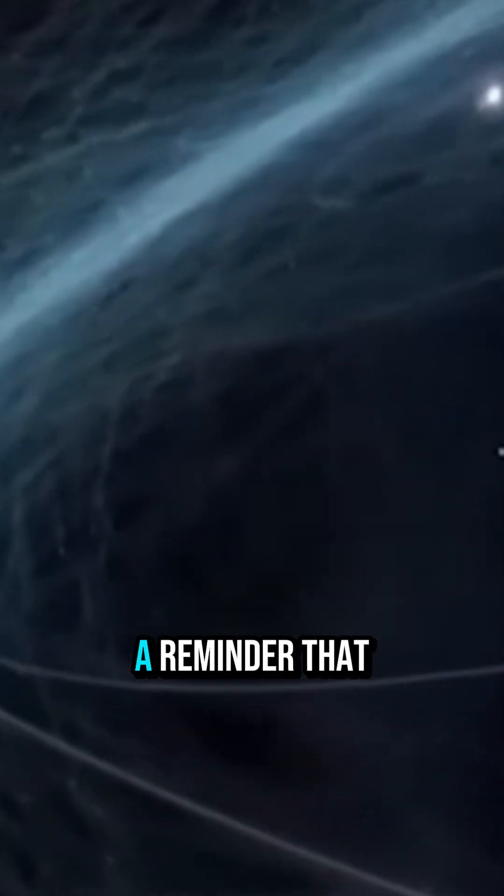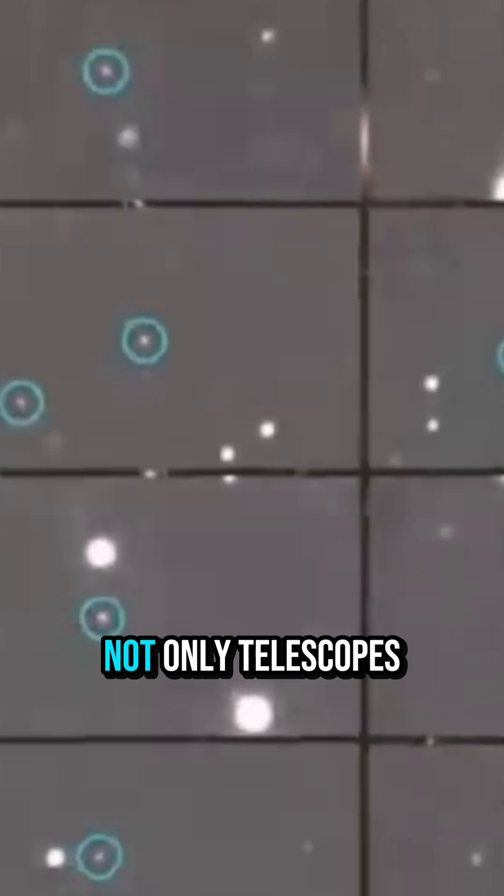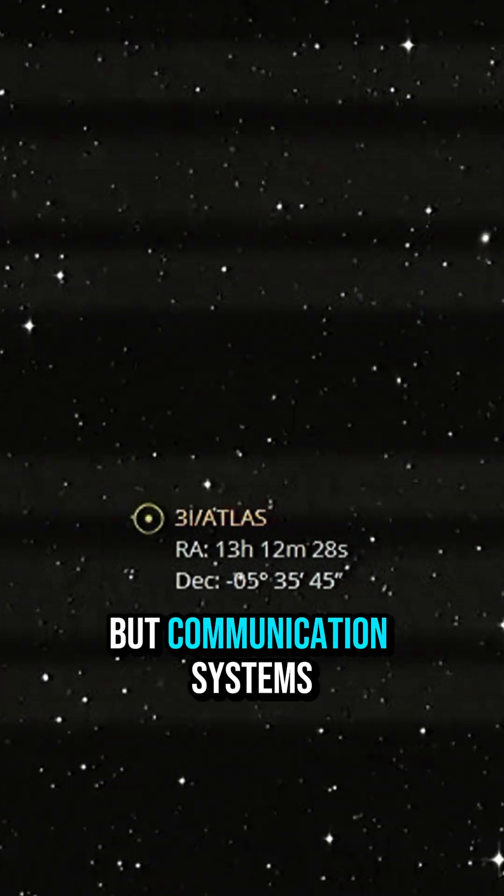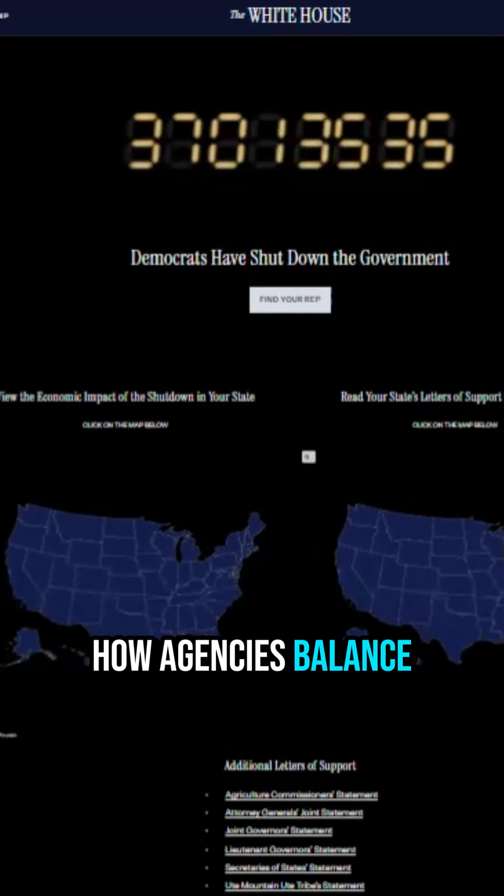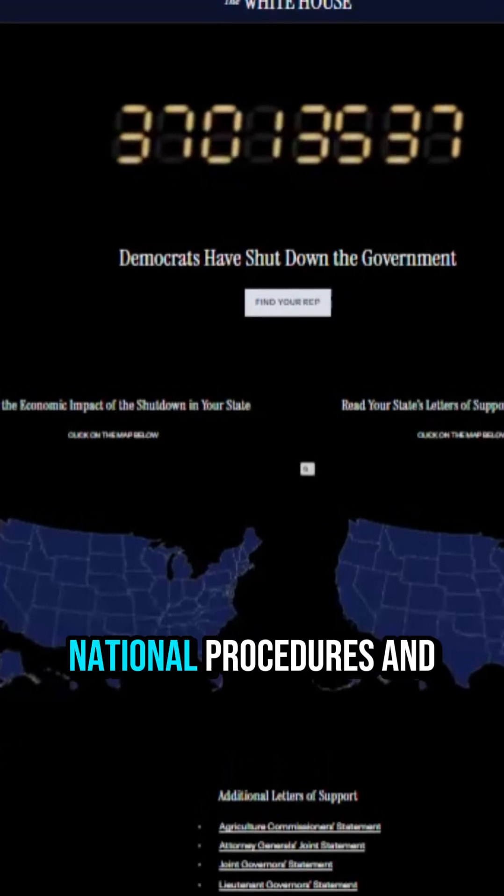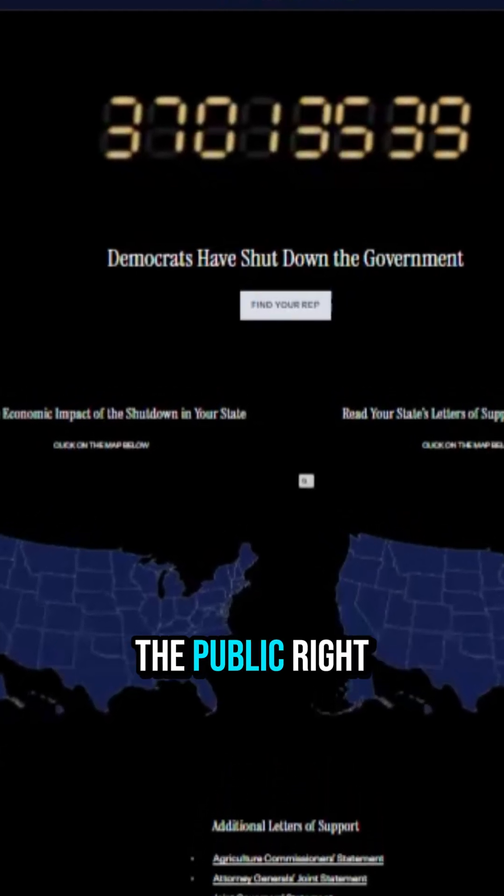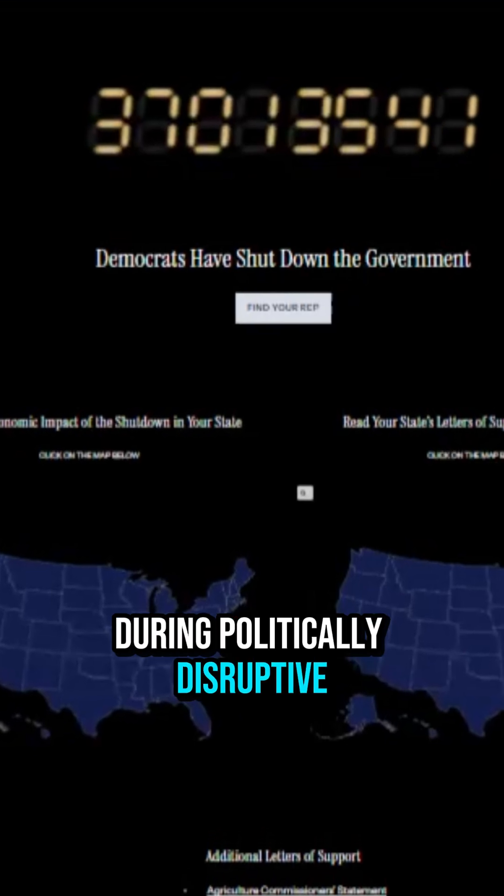This moment is a reminder that rare cosmic visitors test not only telescopes, but communication systems and public trust. The questions are not merely sensational. They are about how agencies balance careful science, national procedures, and the public right to know during politically disruptive times.